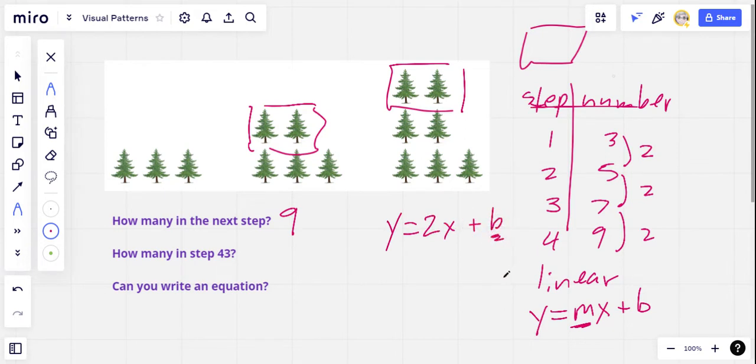Now, what is that B? Well, the way to determine that is to, let me number my steps here. Here's step one. Here's step two. Here's step three. We can look at step one. And X is going to represent the step number. And Y is going to represent the number of trees. So we need three trees in step one. So Y equals 2 times 1, step one, plus some number. So it looks like three equals two plus, well, that would have to be one because two plus one is three. So our equation is going to be Y equals 2X plus one.